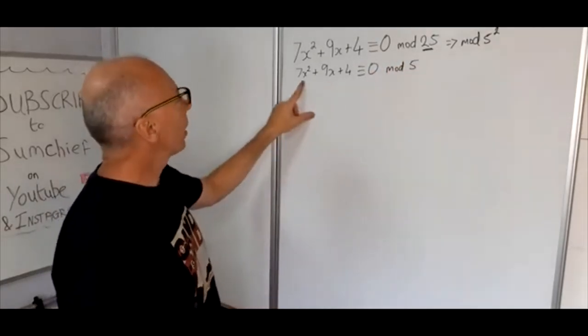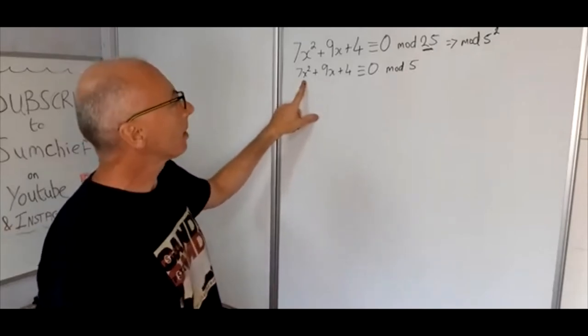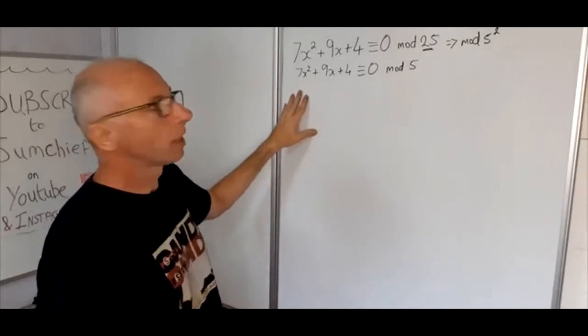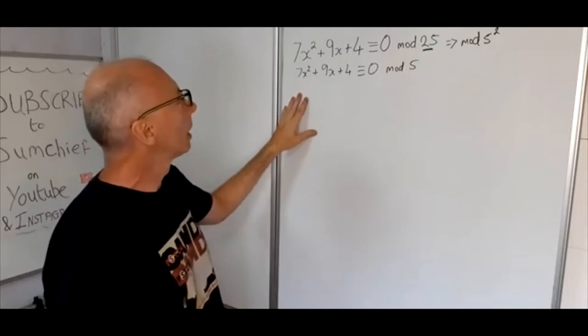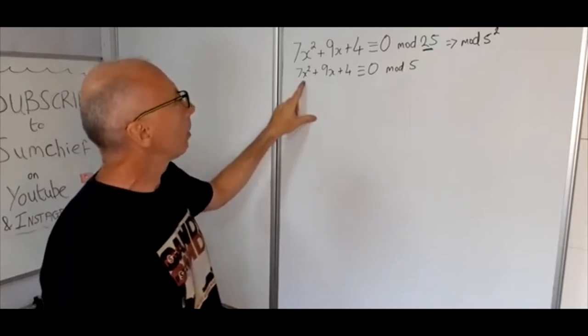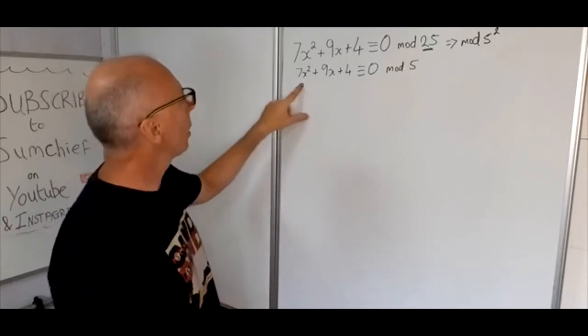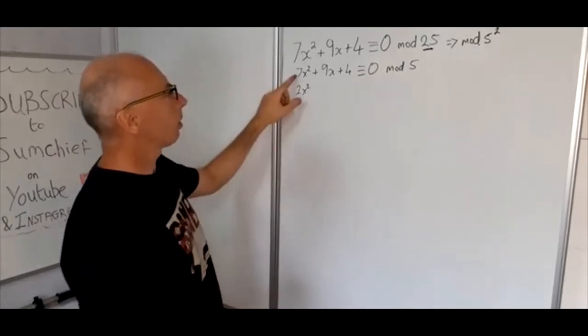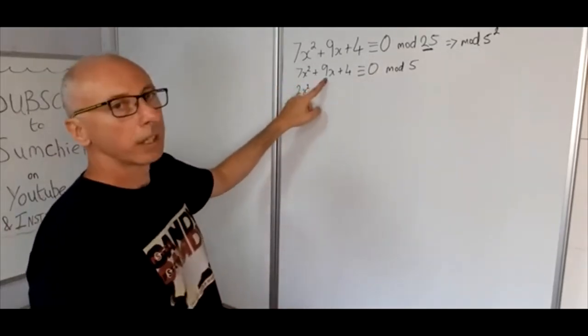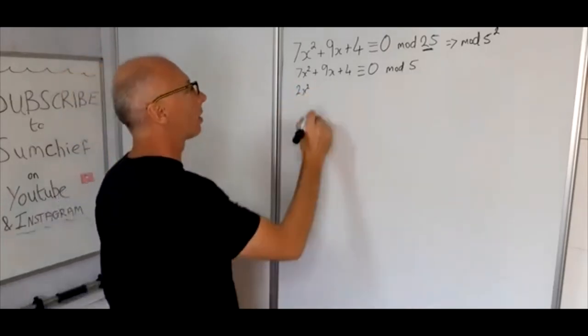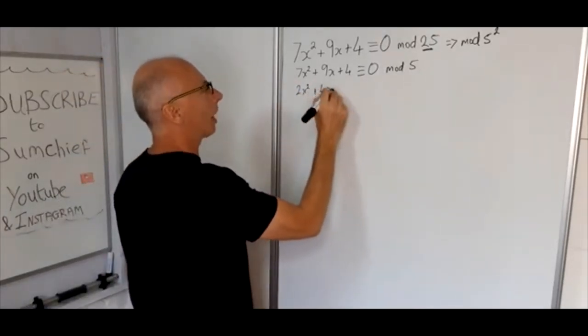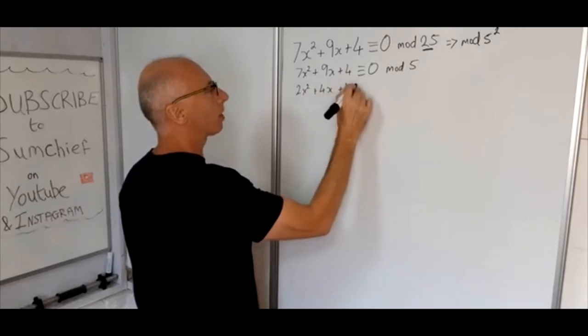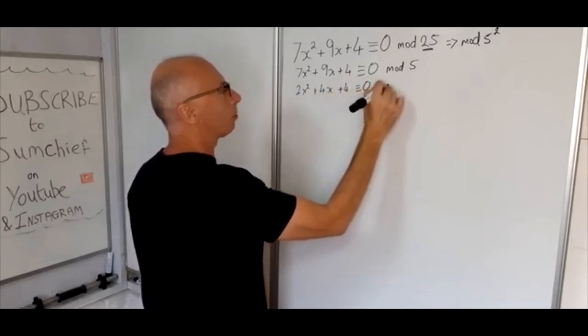So 7x squared plus 9x plus 4 is congruent with 0 mod 5. So now what we need to do is find a couple of values for x mod 5 to start with. So we can break this down a little bit already. So modulo 5, we can translate that as 2x squared plus 4x plus 4, and that's mod 5.